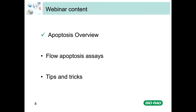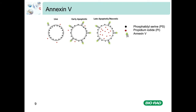Annexin V staining is one of the most common methods to detect apoptosis by flow. The staining is quick and does not require fixation. In early apoptosis, phosphatidylserine (PS) is exposed at the cell surface, and Annexin V binds to this membrane phospholipid in the presence of calcium ions. Addition of PI staining allows you to distinguish between early and late stage apoptosis. As cells progress down the apoptotic pathway, they lose membrane integrity, allowing PI to pass into the cell. However, this assay does not tease apart individual stages of apoptosis or distinguish between intrinsic and extrinsic pathways.